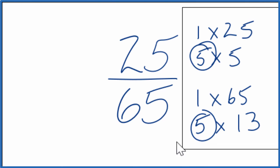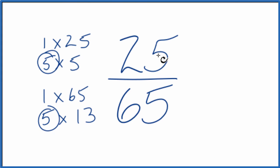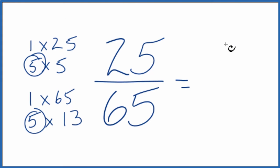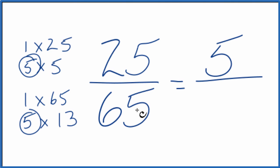Let's move these over here. So 25 divided by 5, that gives us 5. And then 65 divided by 5 gives us 13. And we've simplified the fraction 25 65ths down to 5 13ths.